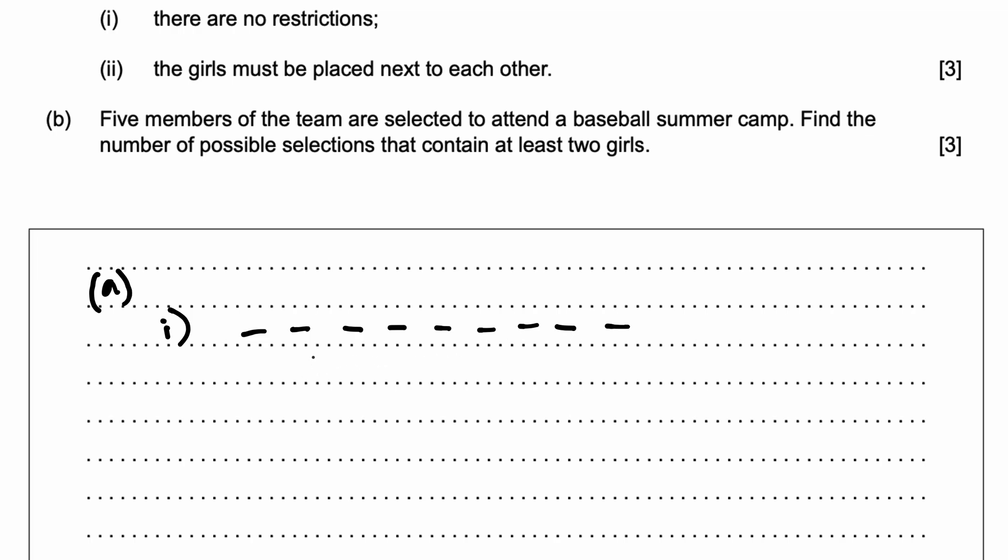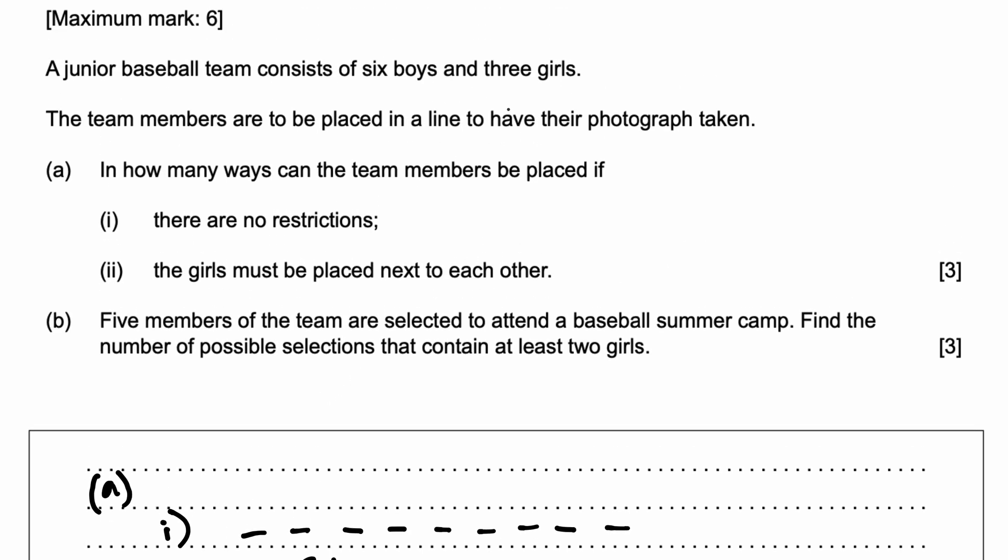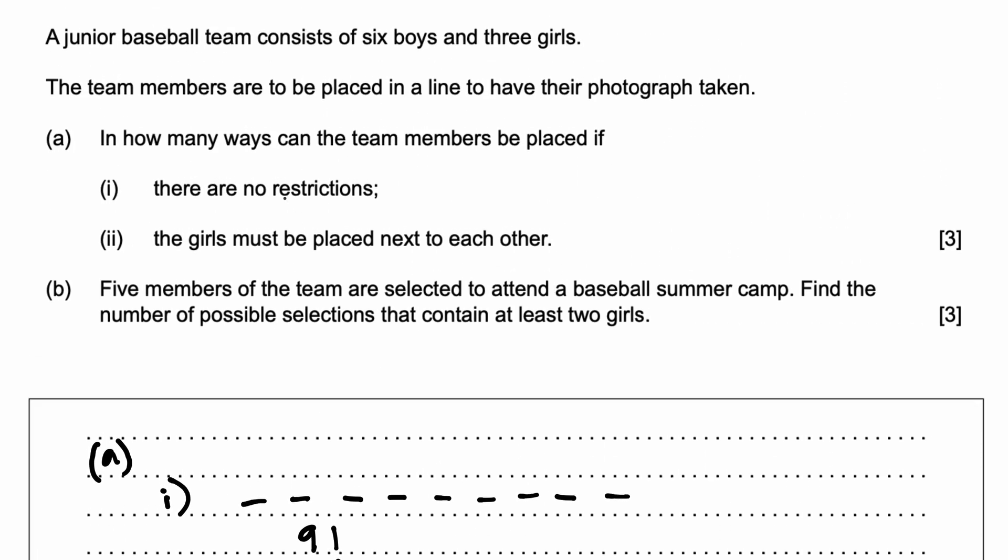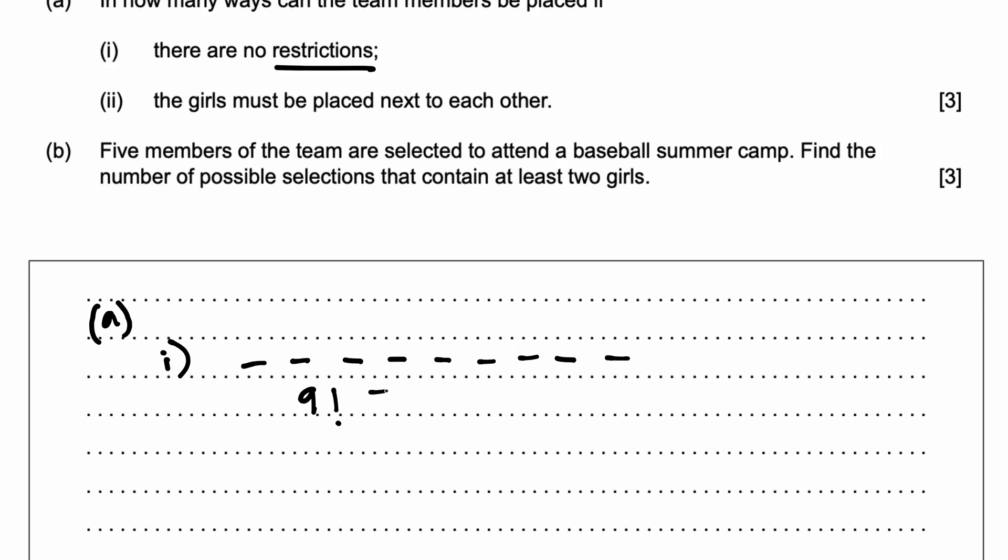Meaning there are nine factorial ways that these nine children, six plus three, can interchange between each other to have their photographs taken. Because there are no restrictions, they can be in however many ways they want. So putting this into your calculator,